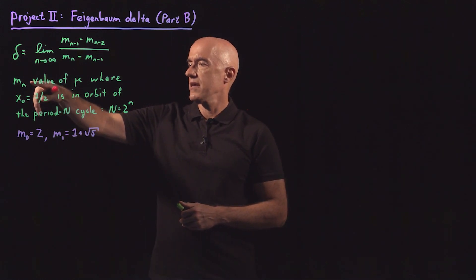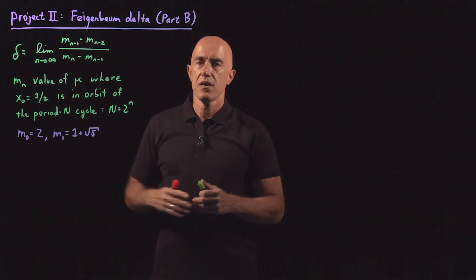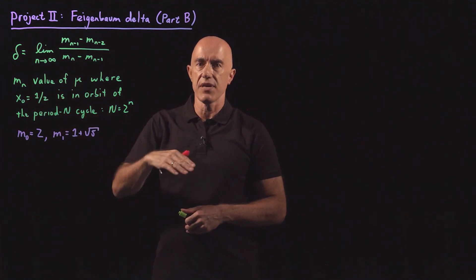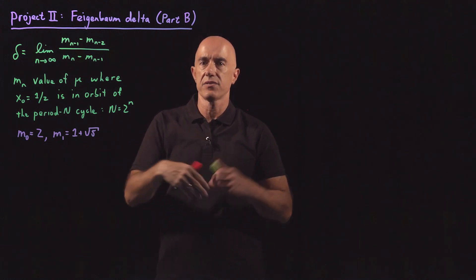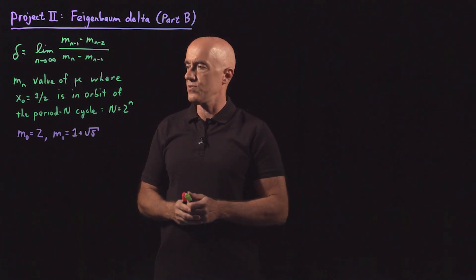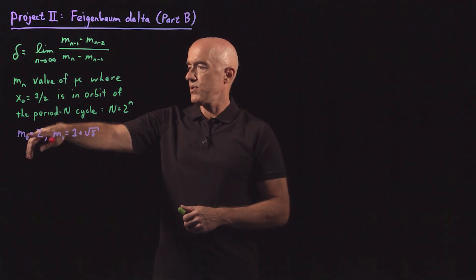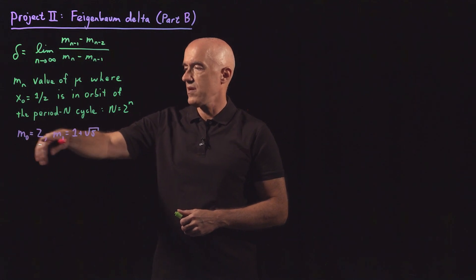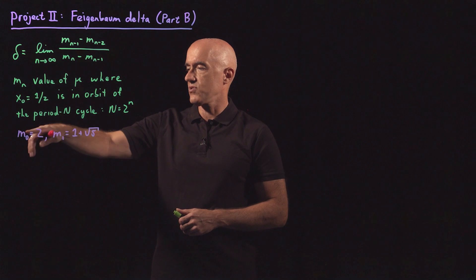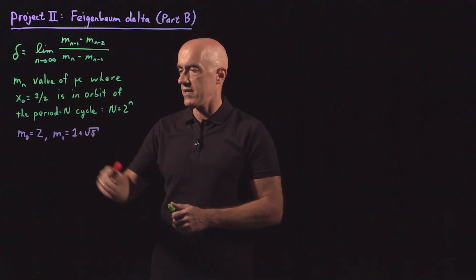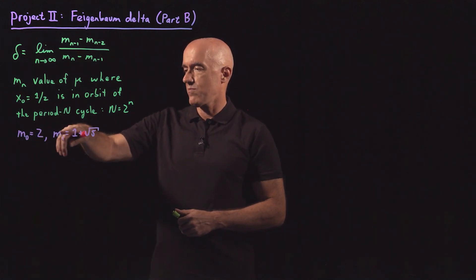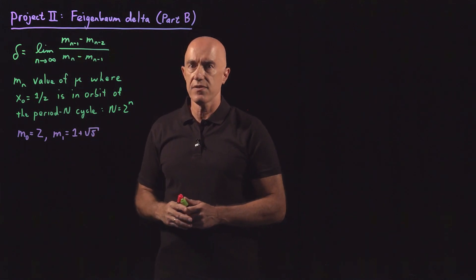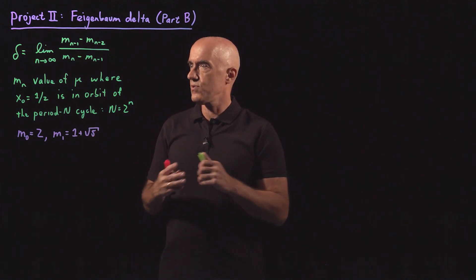m sub 1 is the value of mu where the orbit is going to be one half, something else, one half, something else — a period 2 cycle. We computed m sub 0 equal to 2, so this is in the period 1 cycle where x naught equals one half is the fixed point. And we computed m sub 1 equals 1 plus square root of 5, which is in the period 2 cycle.